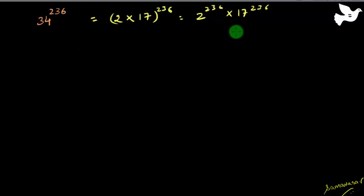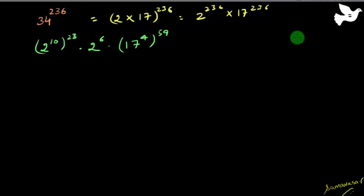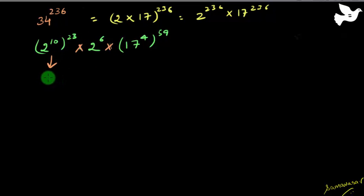For 2^236, I write this as (2^10)^23 × 2^6. Since 2^10 is raised to the power 23, which is odd, the last two digits of that part are 24. And 2^6 is 64, so the last two digits there are 64. Now I still need to handle 17^236, which I write as (17^4)^59, since 59×4 = 236.